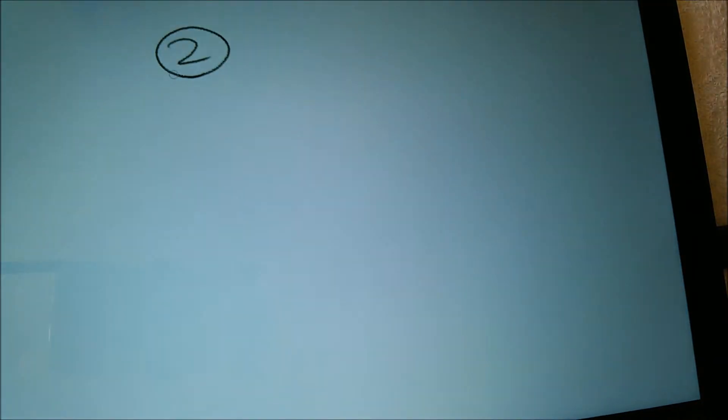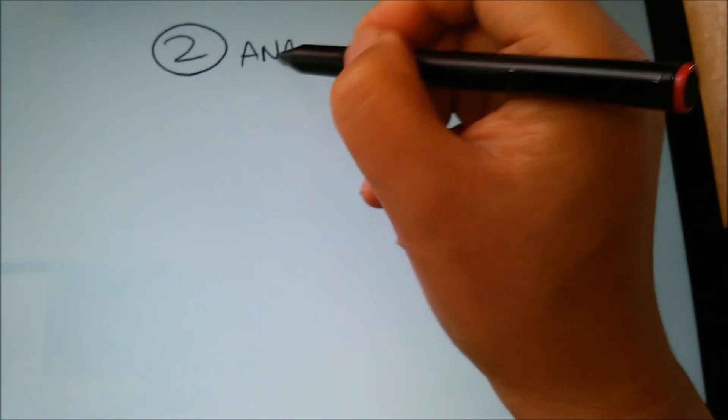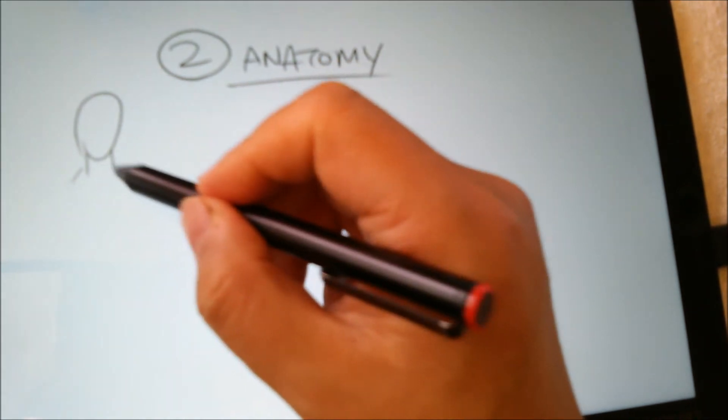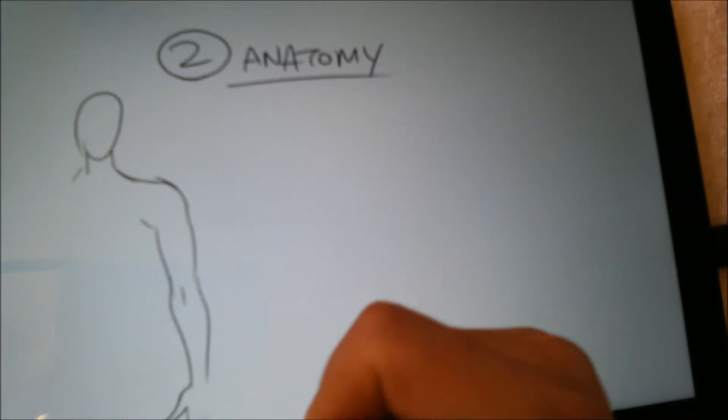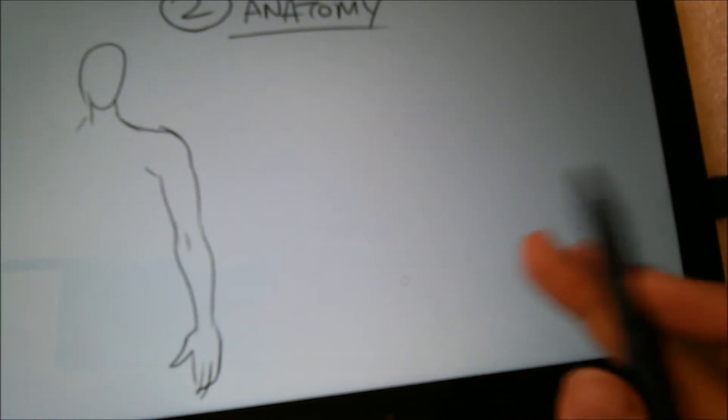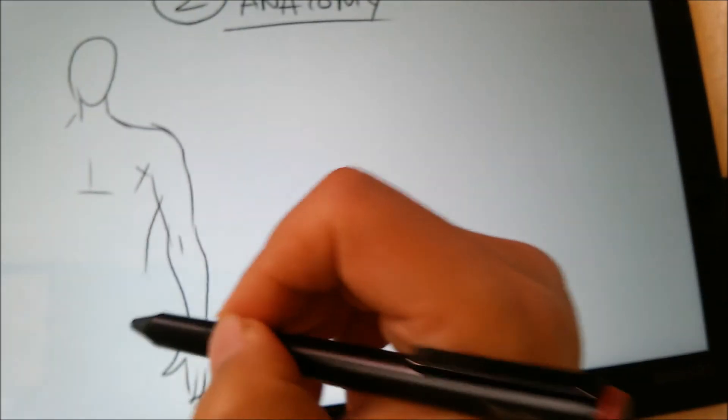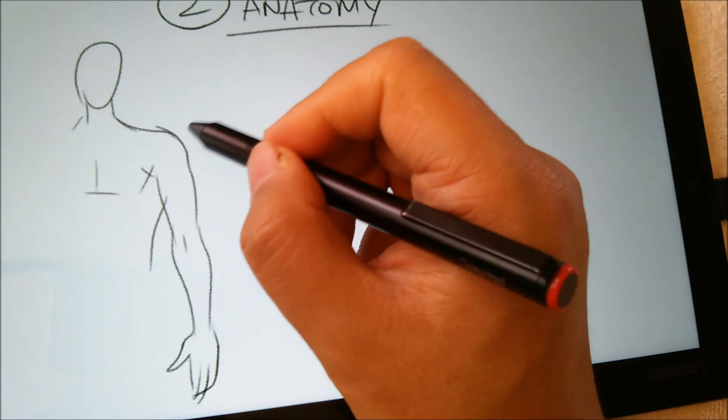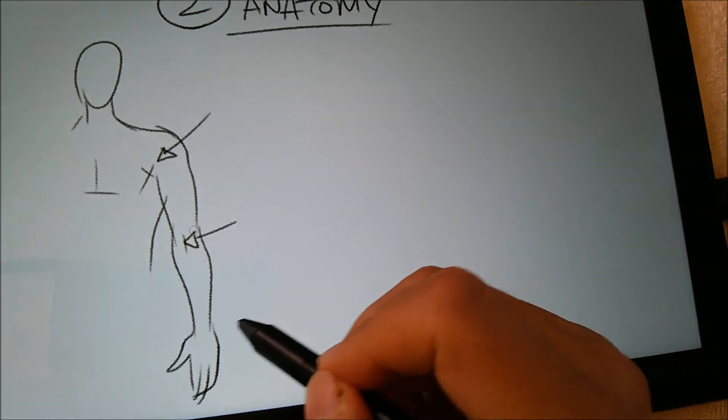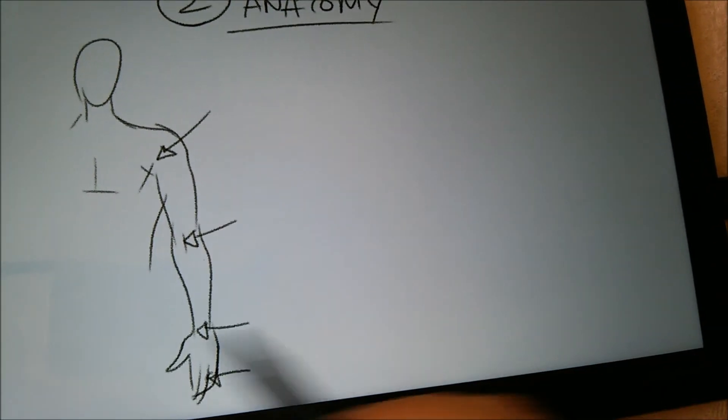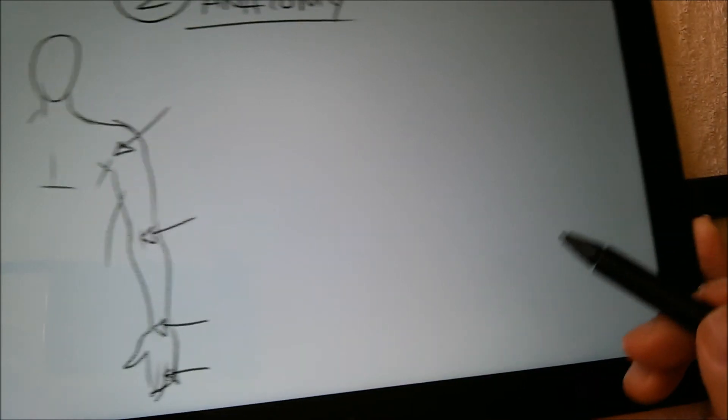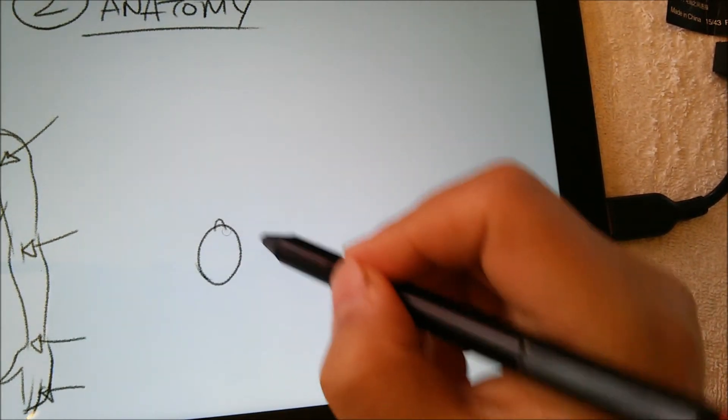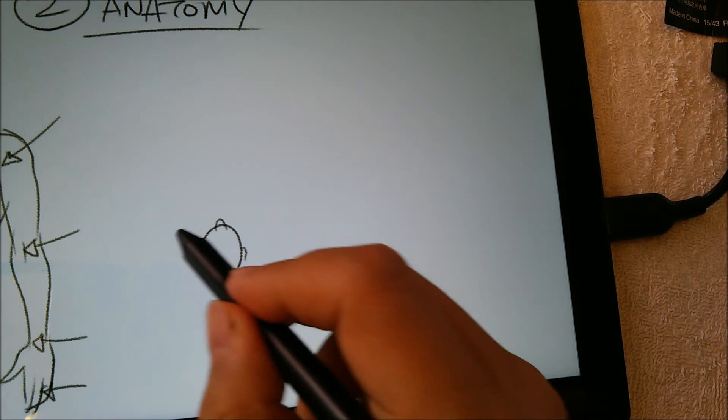Number two, you have to remember your anatomy. I'm going to draw you a really quick person here. There's your shoulder, there's an arm, there's forearm, there's the hand. On an arm like this you have shoulder, you got the elbow, you got your wrist and you got your fingers. These are all articulation points on your arm.